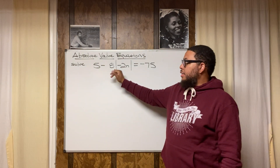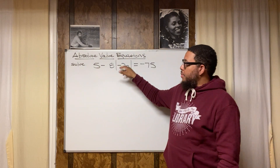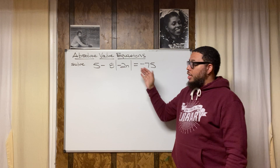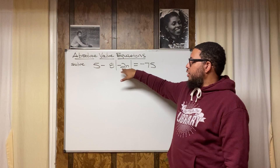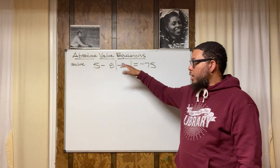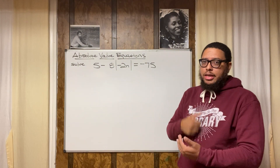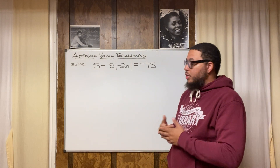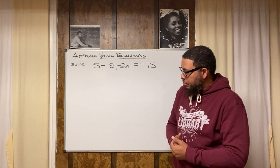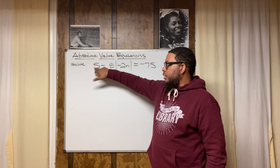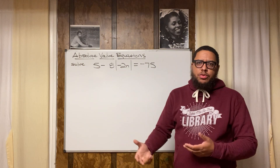Check this out — we have: 5 minus 8 times the absolute value of negative 2n, equals negative 75. That's our equation. I want to get the absolute value of negative 2n by itself — that's my goal. To make that happen, I've got to do two things: get rid of this 5, and get rid of this negative 8.